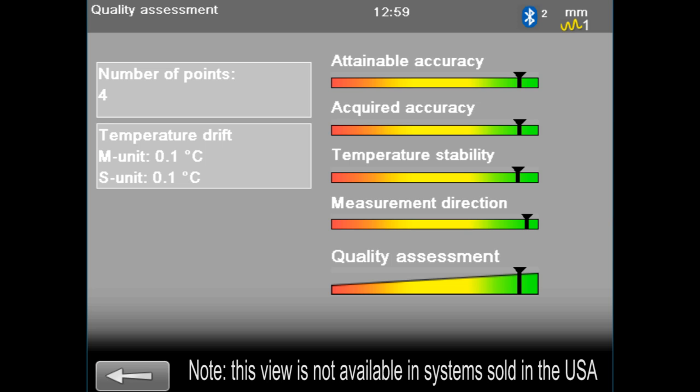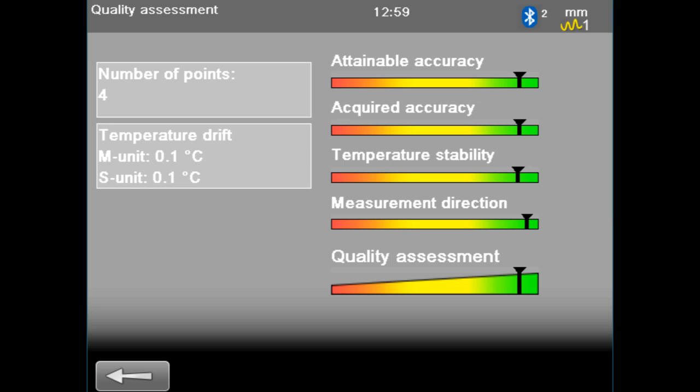The top four bars are quality factors affecting the measurement result: attainable accuracy, acquired accuracy, temperature stability, and measurement direction. The bottom bar is the quality assessment. This is the sum of the four quality factors.